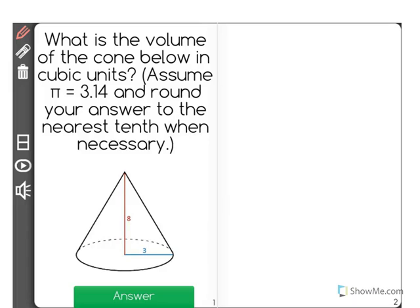What is the volume of the cone below in cubic units? Assume pi equals 3.14 and round your answer to the nearest tenth when necessary.